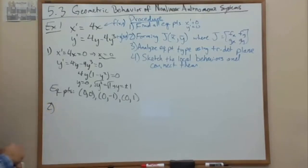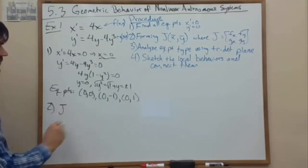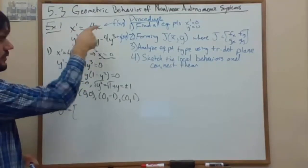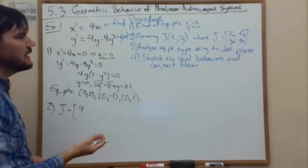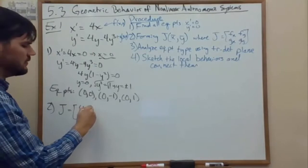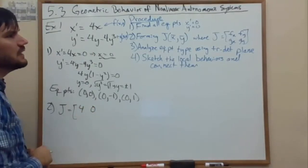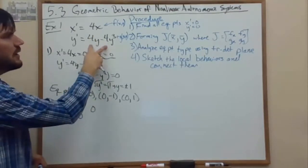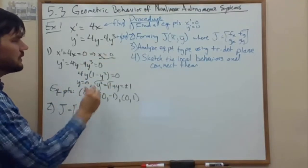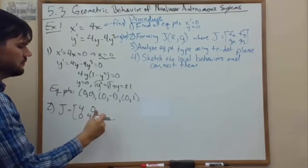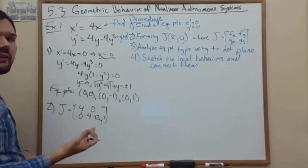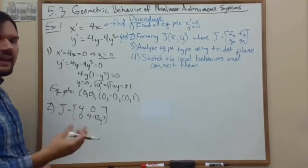Second step: we form the Jacobian. The Jacobian is the matrix of x-partials and y-partials of our two functions. The x-partial of 4x is simply 4, and the y-partial is 0 since there are no y's. For our second function g, the x-partial is 0 since there are no x's, and the y-partial is 4 − 12y². Now we evaluate this Jacobian at each of the equilibrium points and analyze.